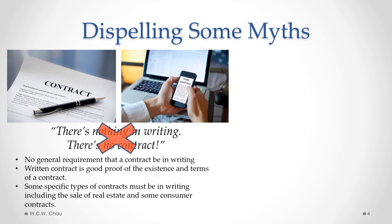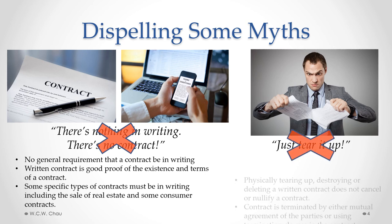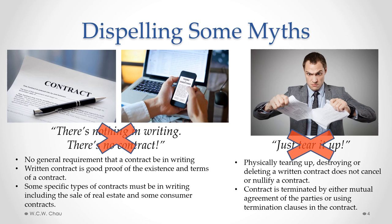There are some exceptions to that rule. There are some specific types of contracts that have to be in writing in order to be enforceable. The most notable type is any kind of contract involving the sale of real estate, which has to be in writing. The other myth is that if you don't like a contract, you can just tear it up. Tearing it up might make you feel better, but from a legal perspective it doesn't do anything. It does not eliminate the contract or get rid of the legal obligations that arise from a contract. A contract can be terminated by either mutual agreement between all the parties involved, or if there is a termination clause in the contract that can be applied to have the contract terminated.